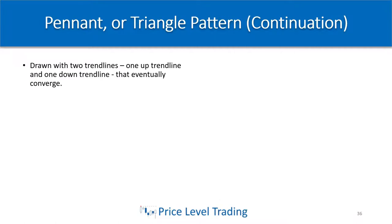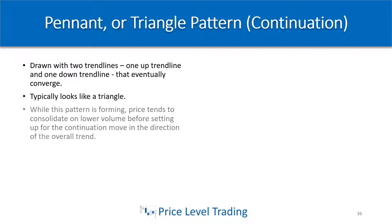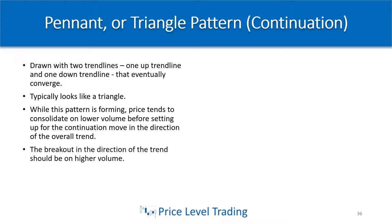The first chart pattern we'll talk about is the pennant or triangle pattern — this is a continuation pattern. It's drawn with two trend lines, one uptrend line and one downtrend line, that eventually converge, forming a triangle shape. While this pattern is forming, price tends to consolidate on lower volume before setting up for the continuation move in the direction of the overall trend. The breakout in the direction of the trend should be on higher volume — you need to confirm the patterns with volume to make sure there is momentum in favor of the trade.